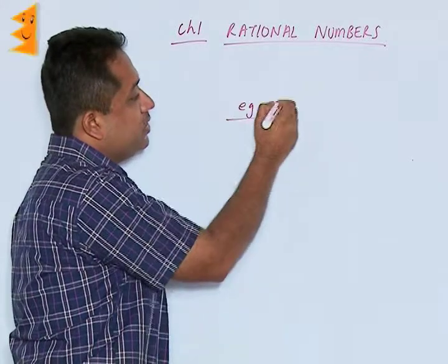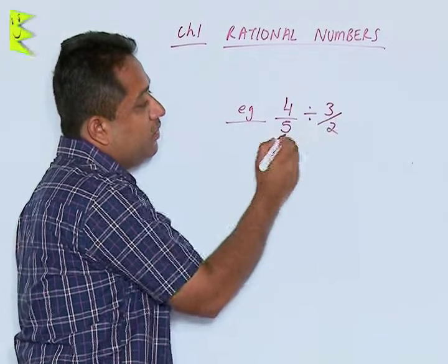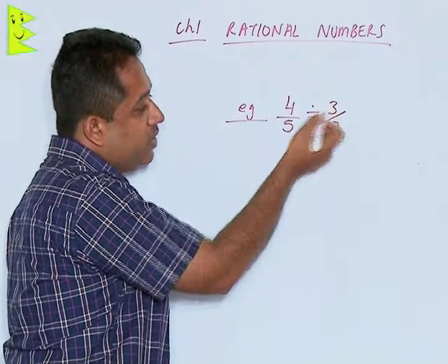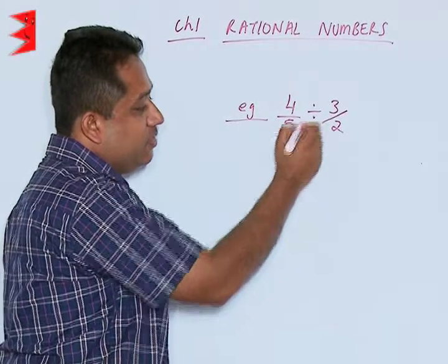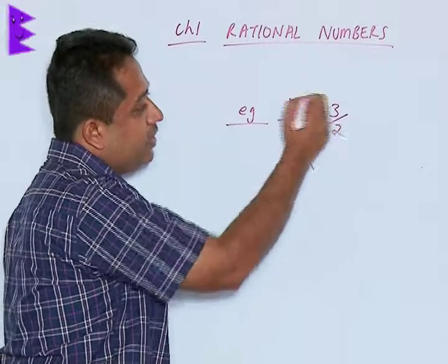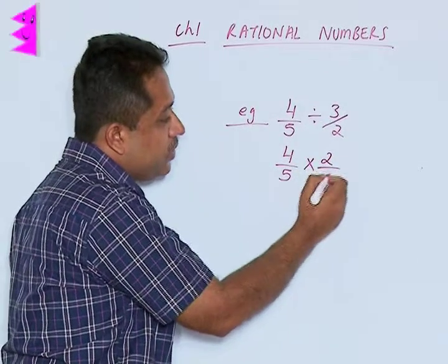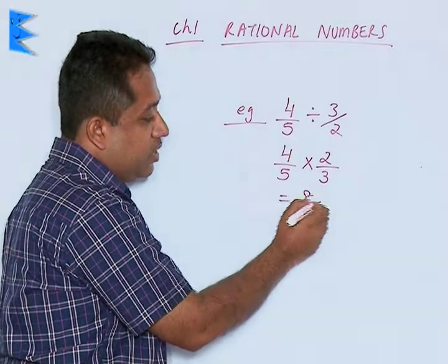In division, we cannot simply divide directly. Let's say 4 by 5 divided by 3 by 2. The division sign has to be converted into a multiplication sign by taking the reciprocal of the second number. The first number remains as it is. So this becomes 2 upon 3, and the answer is 8 upon 15.